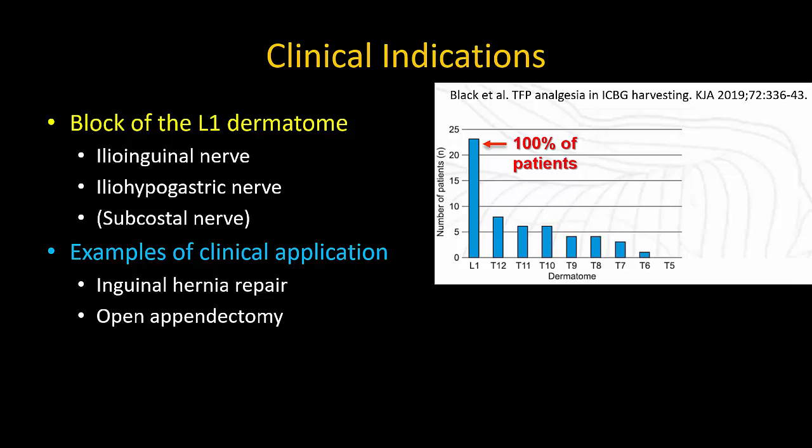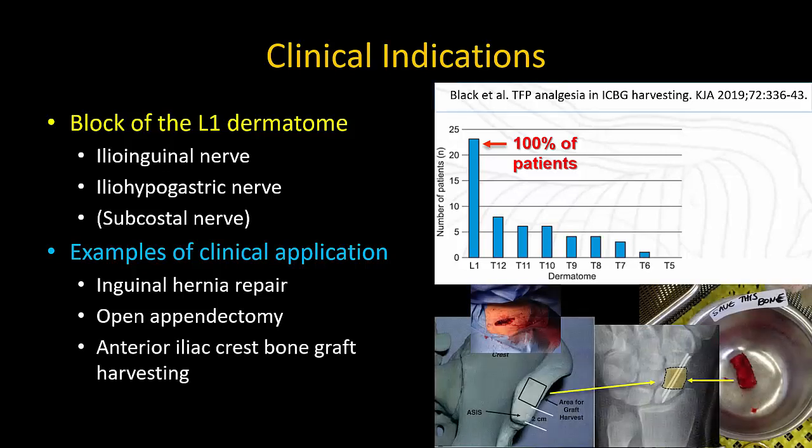At Toronto Western Hospital, we have also found it particularly suited to providing analgesia for anterior iliac crest bone graft harvesting, as the block is performed proximal to the L1 branches that innervate the anterior iliac crest.